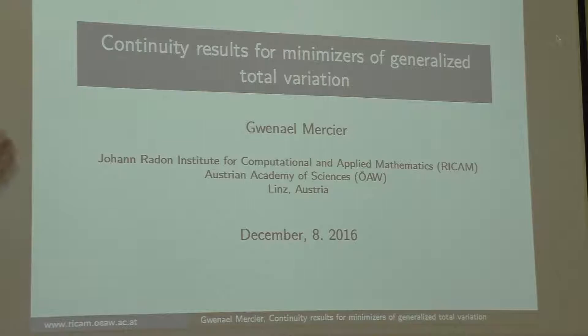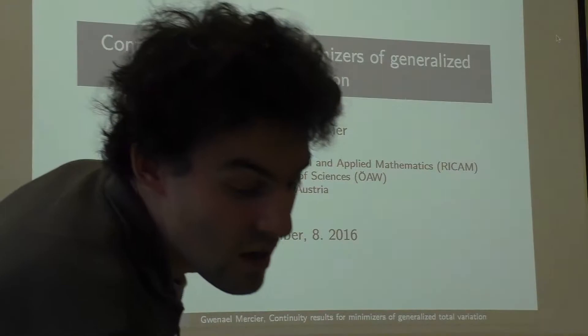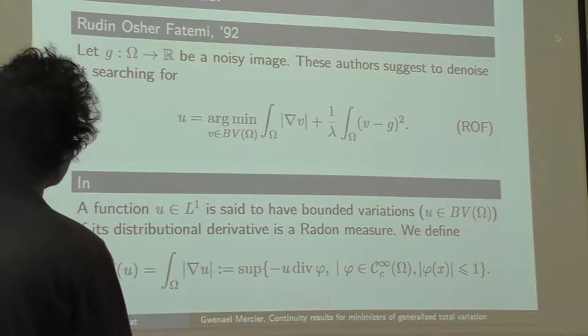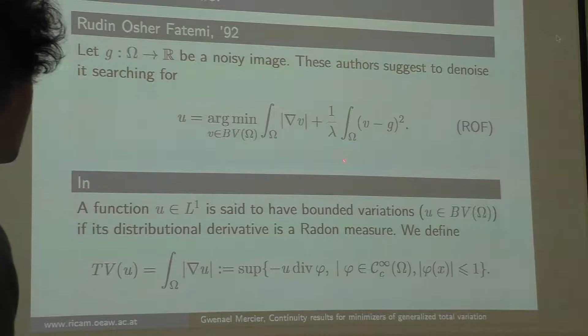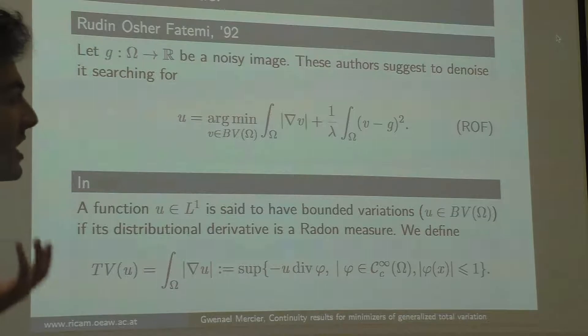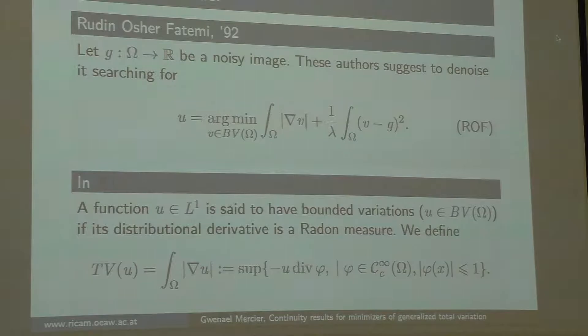First, I'm not a professor, I'm a postdoc in Linz, but I will speak about my work on continuity of minimizers of total variation. The reason for doing this is from a model for denoising pictures. It's a common model used and introduced by Rudin, Osher, and Fatemi in '92 that suggests if you're given a noisy data g, to try to retrieve less noisy data u by minimizing this quantity. Here you have the L1 norm of the gradient, and here you have some term that will link u and g because you don't want these to be too far from each other.